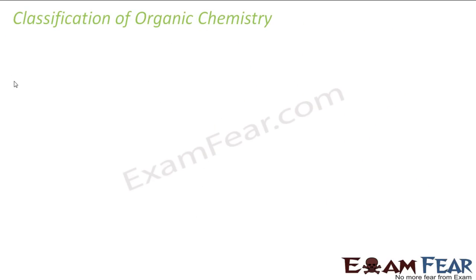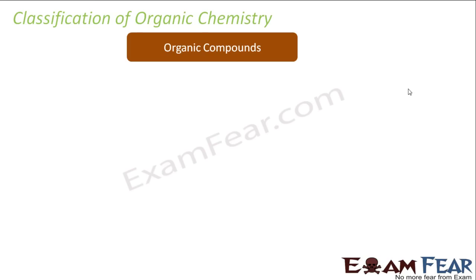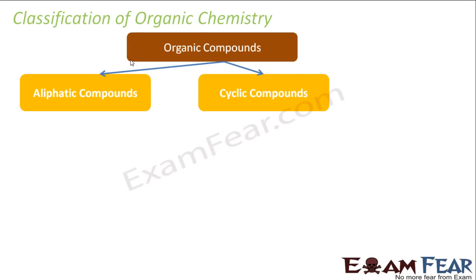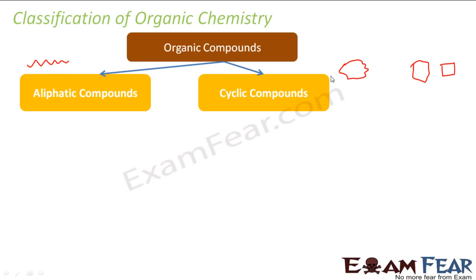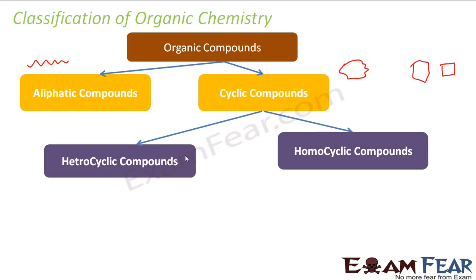Let's talk about the classification of organic chemistry. Organic compounds are classified into two parts: aliphatic compounds and cyclic compounds. Aliphatic is a chain — like a chain, there is no ring. Cyclic is in the form of a cycle, like a ring structure. Cyclic compounds can further be classified as heterocyclic and homocyclic compounds.